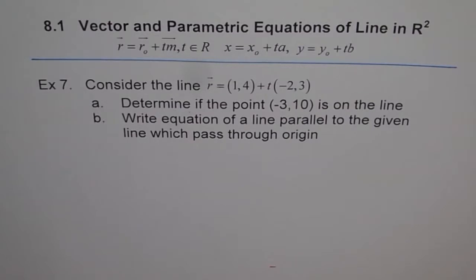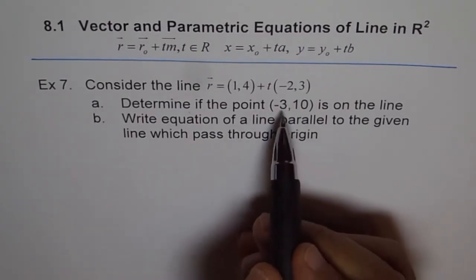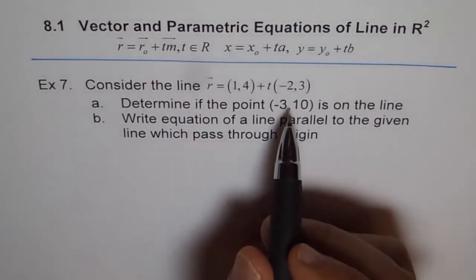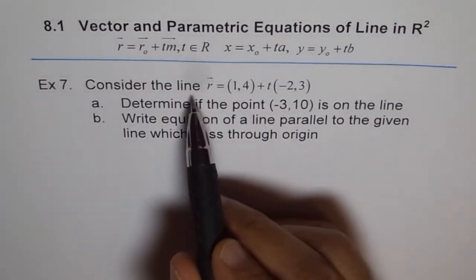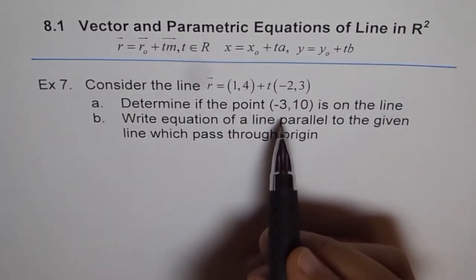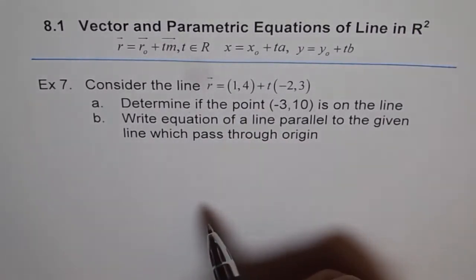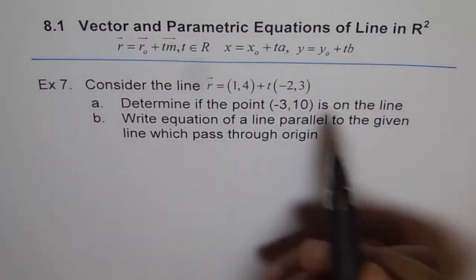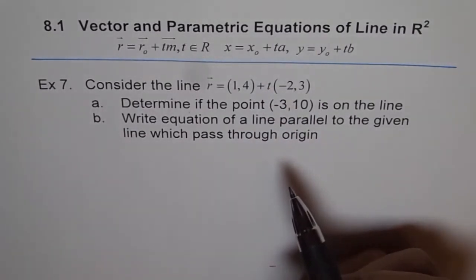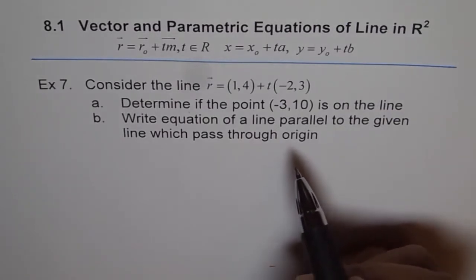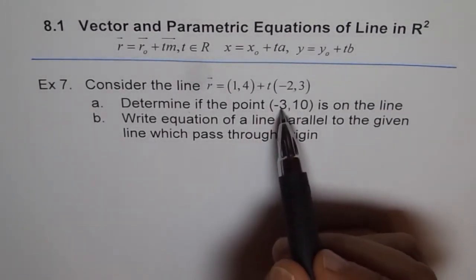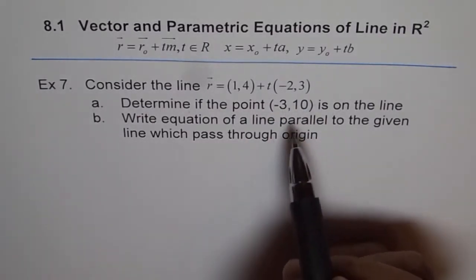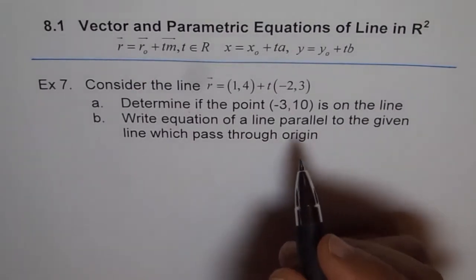There are two parts to this. The first part is to find out whether this point lies on this line or not. The way to do it is to plug in the value of -3 for x and see what value of T satisfies. If the same value of T gives us the y-value of 10, then it's fine. Or we can check the value of T for both x and y values, and if both values of T are the same, that means the point lies on the given line.